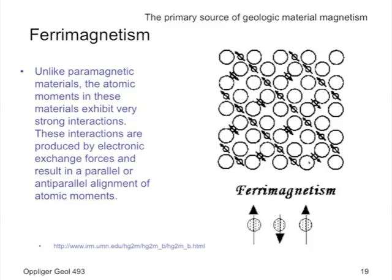Most magnetic minerals we'll look at are ferrimagnetic. They do have a lot of aligned magnetic moments, but most atoms and crystals in ferrimagnetic materials are not all aligned — many are aligned, and some are aligned in the opposite direction. This gives a somewhat weaker total magnetic susceptibility, but in certain cases it can be almost as strong as ferromagnets. This alignment of atomic moments is the primary source of magnetism in geologic materials.